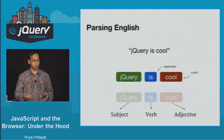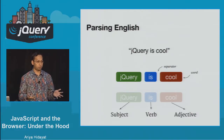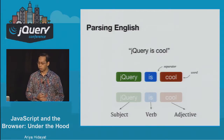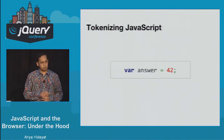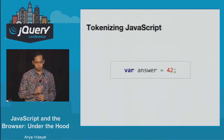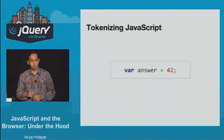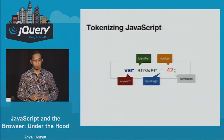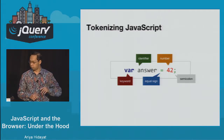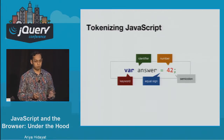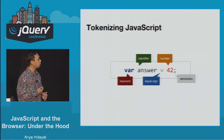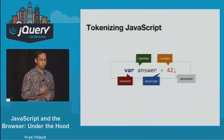There can be cases where a list of words doesn't make any sense because it doesn't follow certain rules. Parsing JavaScript is very similar. We start with the step called tokenization — we split one line of code into tokens. 'var' is a keyword, the identifier is 'answer', and so on. So we have five different tokens there.